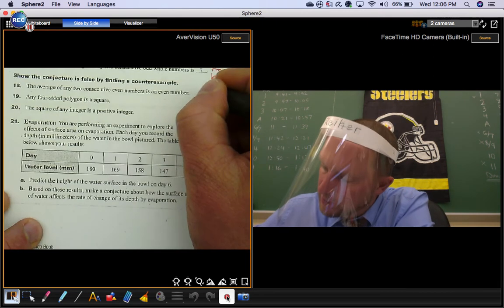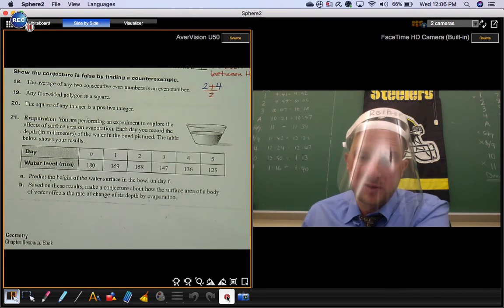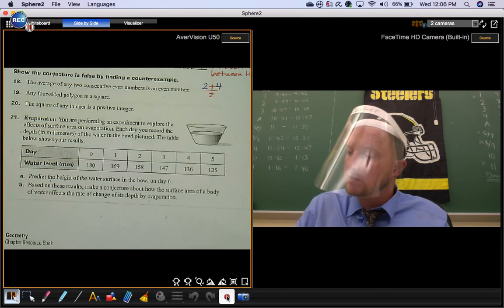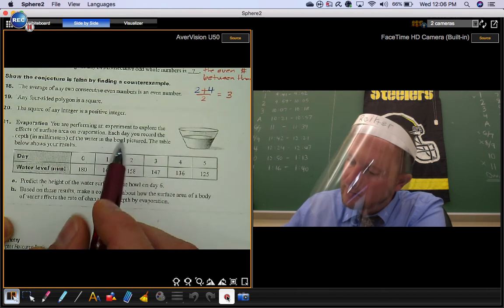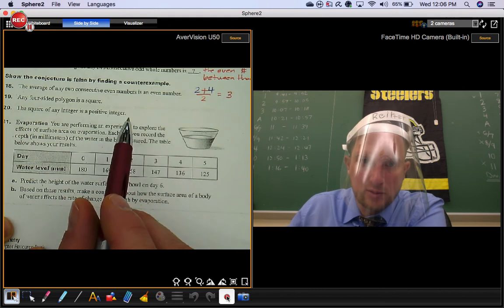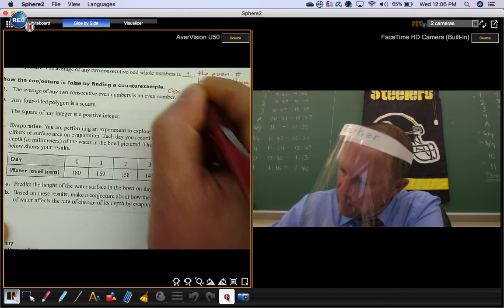Two consecutive even numbers. We could keep it real simple here. Two and four are even numbers and they're next to each other, so they're consecutive. Two plus four is six, and six divided by two is three. Is that an even number? It's not. So that's a good counterexample right there.